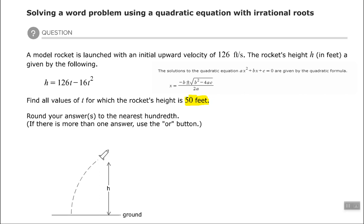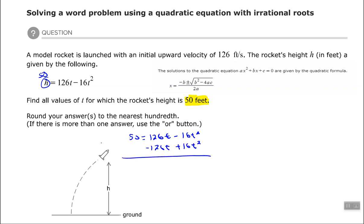The first thing we want to do is substitute. The rocket's height equals 50 feet, so we replace h with 50. Now we have: 50 equals 126t minus 16t squared. I like my leading coefficient to be positive, so I'll subtract 126t and add 16t squared to each side, giving us 16t squared minus 126t plus 50 equals 0.